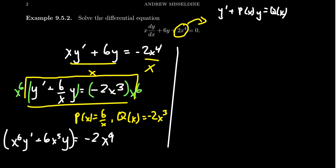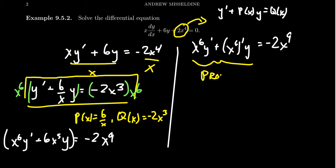Looking at the left-hand side: x to the sixth y prime plus 6x to the fifth y looks like a derivative. I have a sum of two products — in the first, x to the sixth and the derivative of y; in the second, 6x to the fifth, which is the derivative of x to the sixth, times y. That's the product rule. So we can rewrite the left-hand side as the derivative with respect to x of x to the sixth times y, giving us d/dx(x^6 · y) equals negative 2x to the ninth.